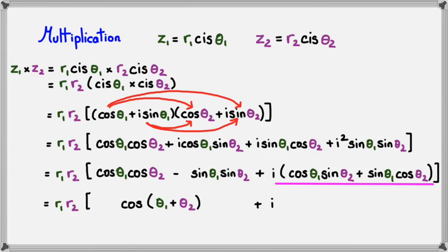And on the right hand side, I've still got i. This lot would actually simplify to sine theta 1 plus theta 2. Now that both of those angles are the same, theta 1 plus theta 2, I can simplify cos and i sine into r1 r2. Cos and i sine would become cis theta 1 plus theta 2.